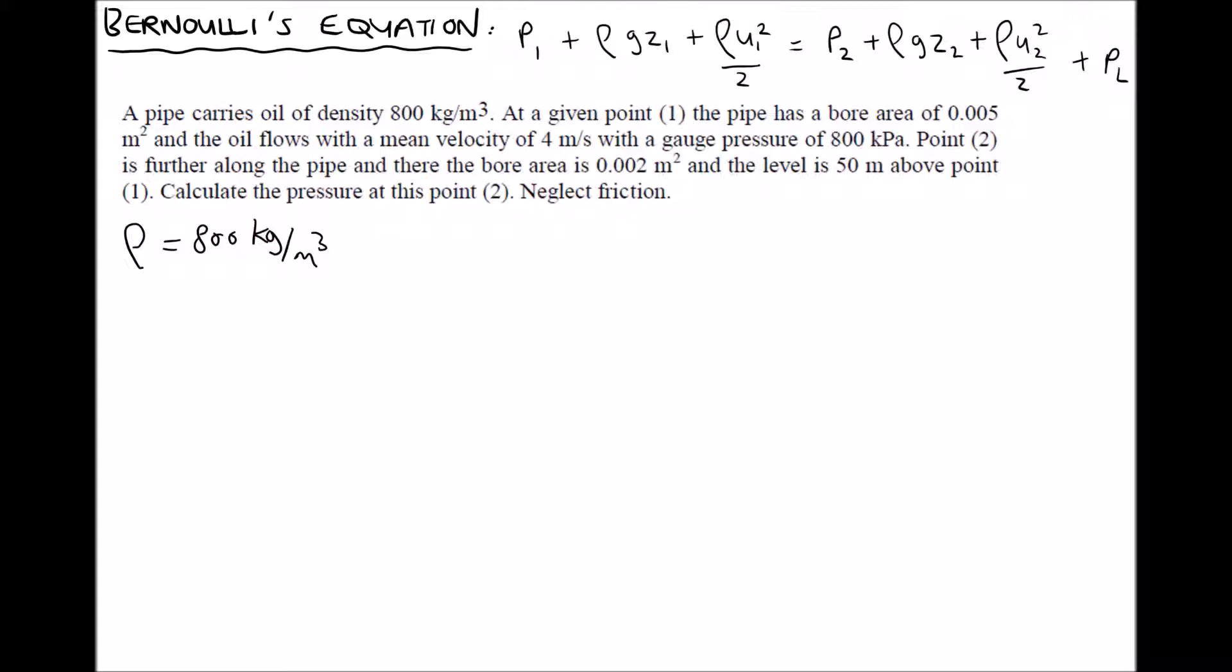It also tells us that it has a gauge pressure of 800 kilopascals. What it's referring to there is position 1. But we don't yet know where that is in relation to position 2. It goes on to state that point 2 is further along the pipe, and there is a bore area of 0.002 meters squared. So we've got a reduction in area, and the level is 50 meters above point 1. And it wants us to calculate the pressure at point 2.